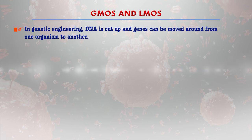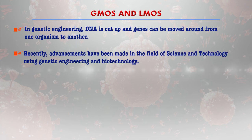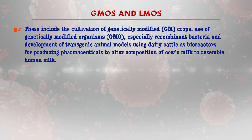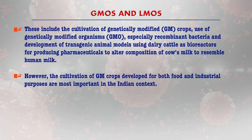In genetic engineering, DNA is cut up and genes can be moved from one organism to another. Recent advancements in science and technology using genetic engineering and biotechnology offer important applications in medicine, agriculture, and other sectors. These include the cultivation of GM crops, use of recombinant bacteria, development of transgenic animal models, and using dairy cattle as bioreactors for producing pharmaceuticals — for example, altering the composition of cow's milk to resemble human milk. The cultivation of GM crops for food and industrial purposes is especially important in the Indian context.